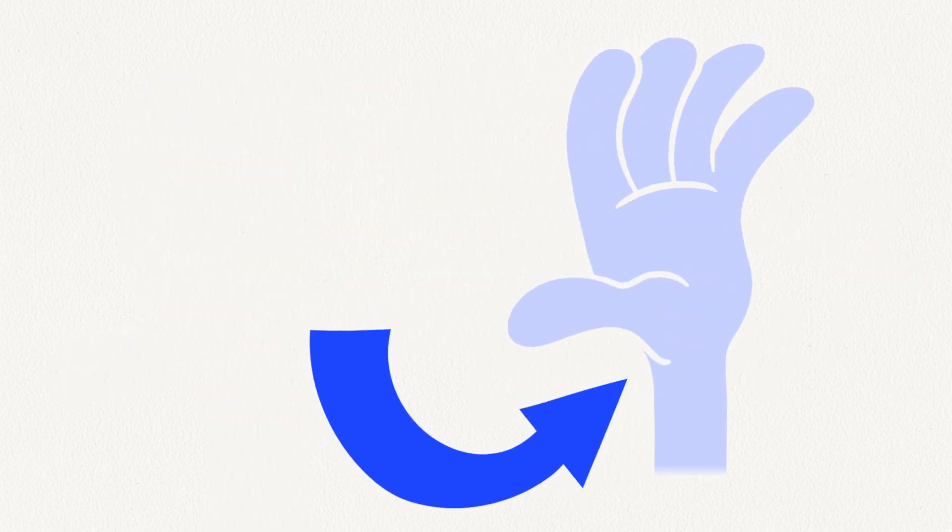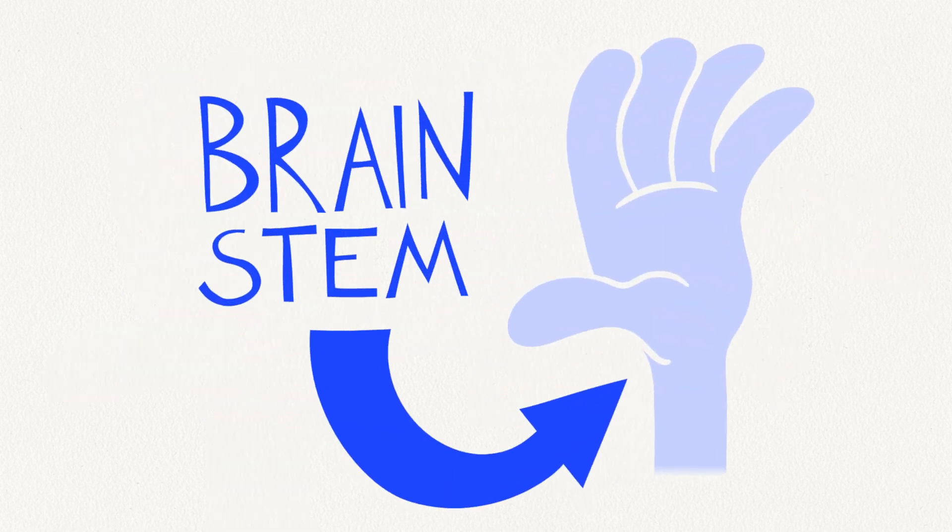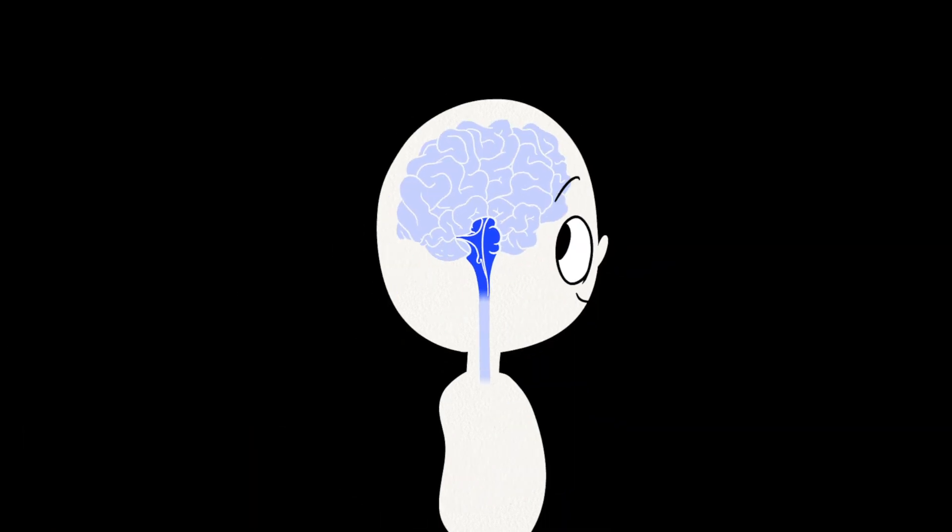The bottom of your hand represents the brain stem and is involved with the automatic physical processes that keep us alive, like breathing and our heart rate.